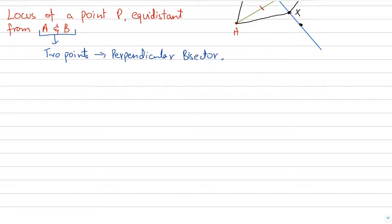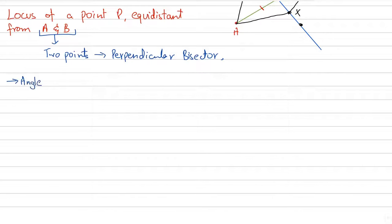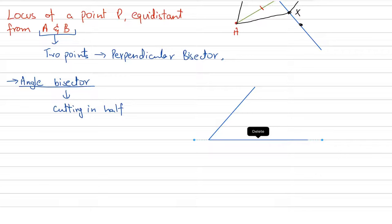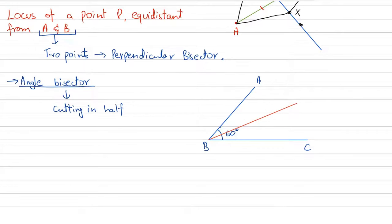The next locus is the angle bisector. This term is self-explanatory — it's a line that bisects an angle. An angle is formed when two lines meet, and bisect means cutting in half.